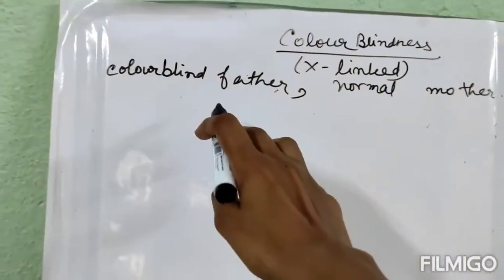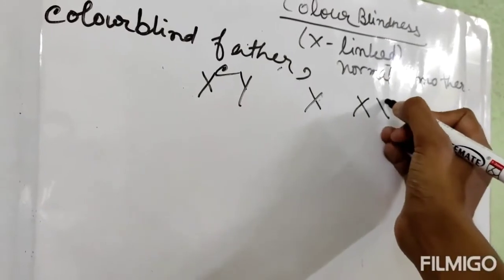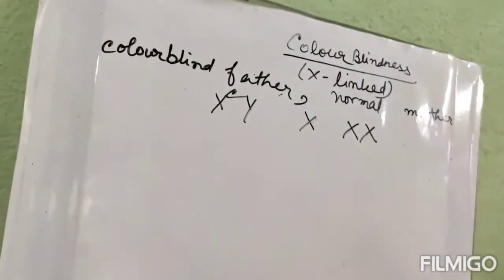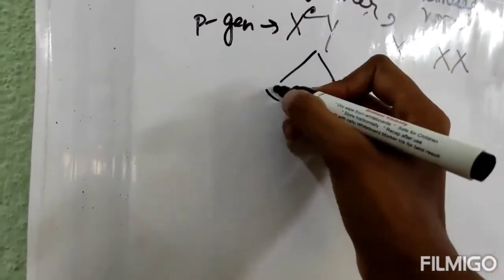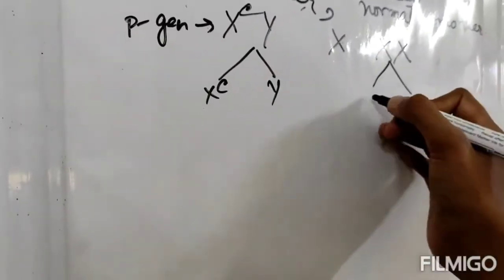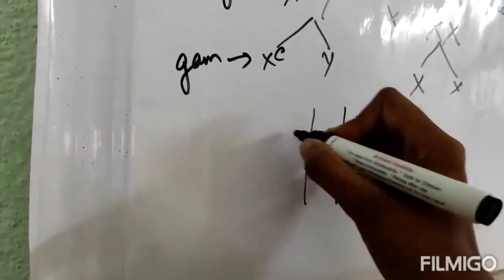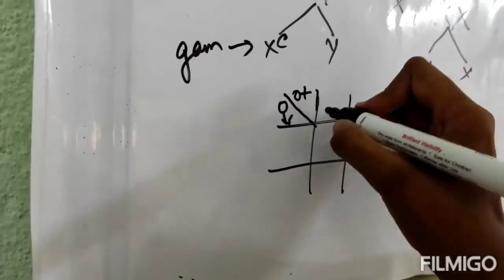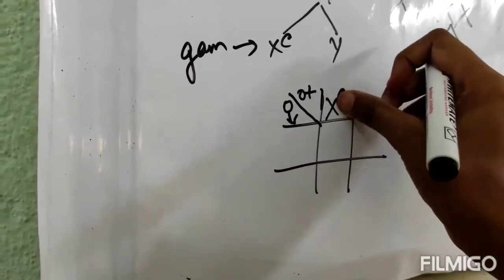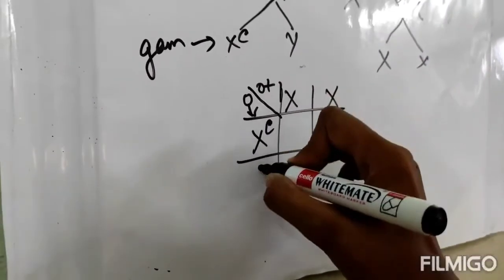Our next cross is color blind father and normal mother. Color blind father means the X chromosome is totally affected: X^C Y. Normal mother means X X. This is the P generation.